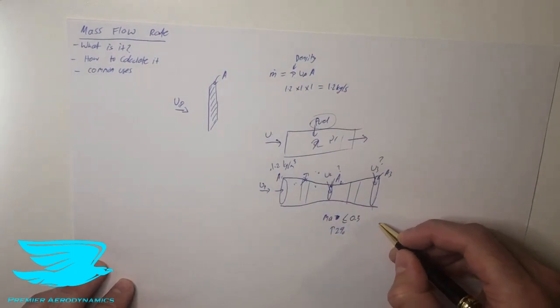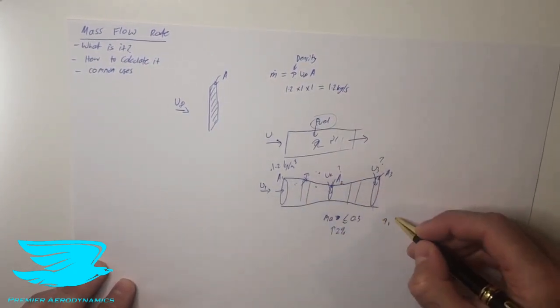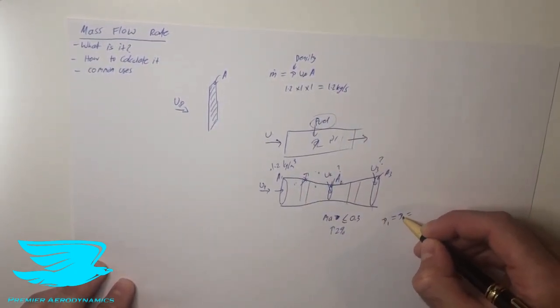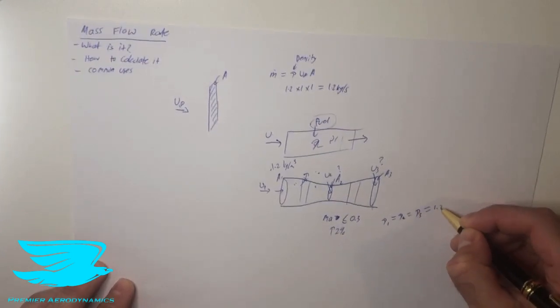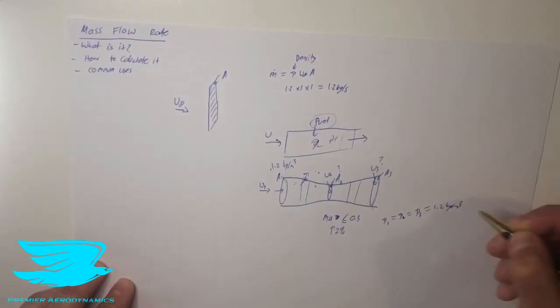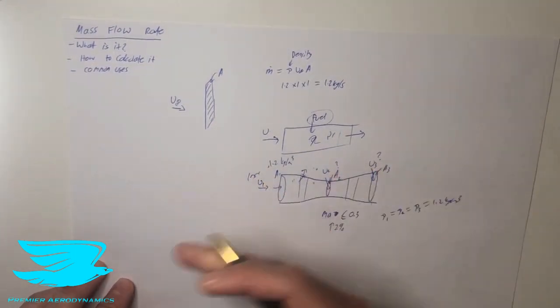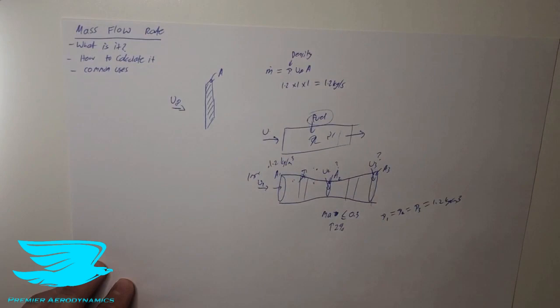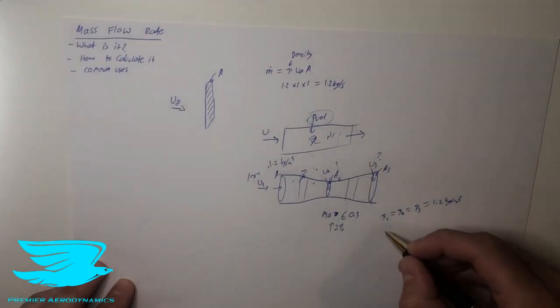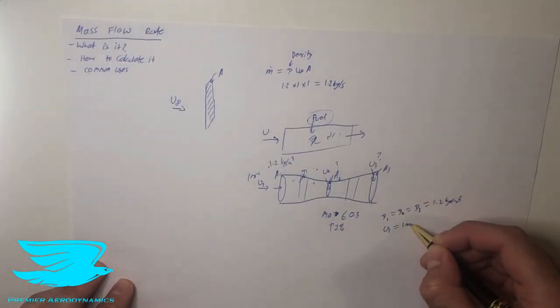We assume the density is constant, so we know that rho 1 equals rho 2, which equals rho 3 and this equals 1.2 kilograms per meter cubed. The velocity, we assume to be 1 meter per second or it can be whatever you want. I'm just going to use 1 meter here just for argument's sake. So we know u1 equals 1 meter per second.